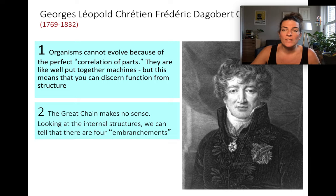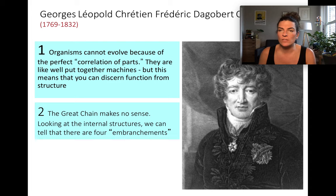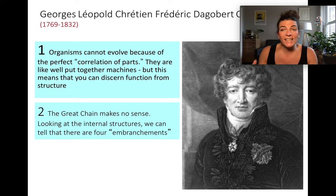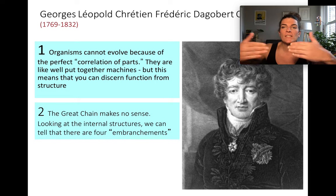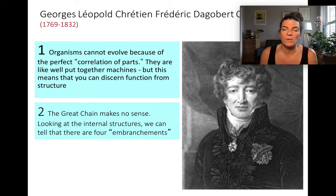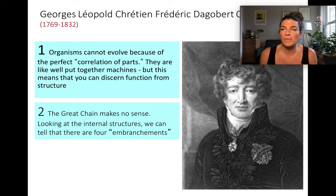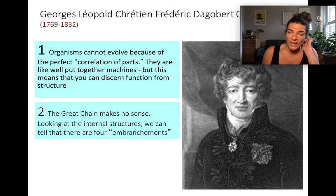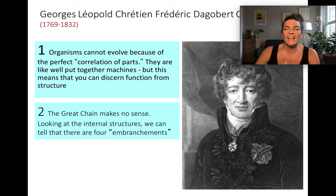Unfortunately, Cuvier did kind of throw away the notion of the great chain — he gave up on that, saying it can't possibly fit within any framework of classification of species. But he didn't go that final step that Darwin went, which is that evolution can explain pretty much everything — why there are different species. Cuvier said that organisms cannot evolve because of this perfect correlation of parts; they're well put together like machines. But this means you can discern function from structure — he was getting there, he just didn't quite get all the way.